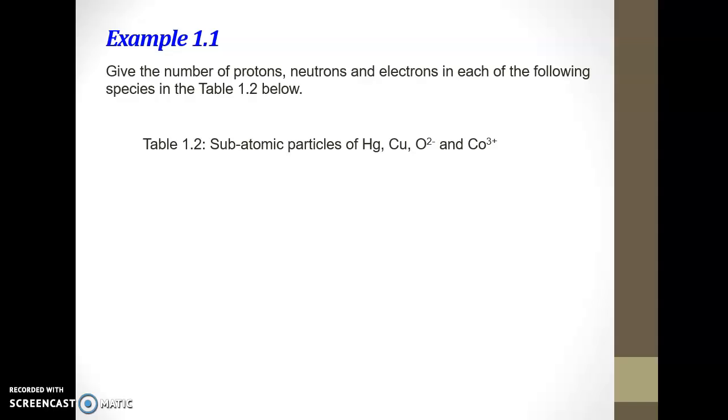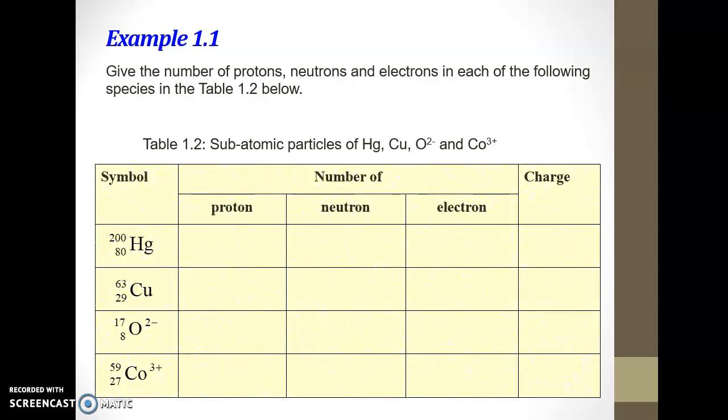Let's do example 1.1. Give the number of protons, neutrons and electrons in each of the following species in the table 1.2 below. This is in your page 19. This is the answer.